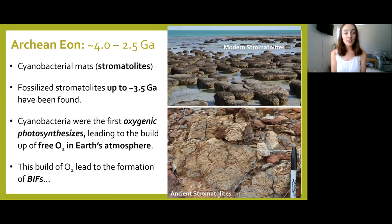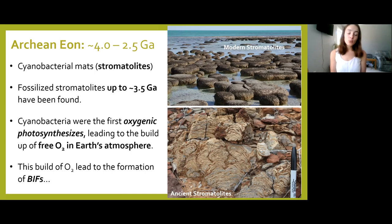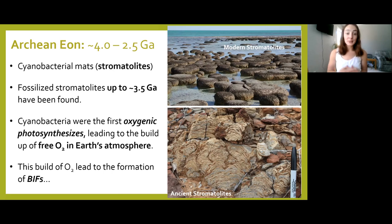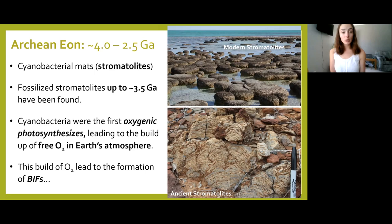The Archean was a 1.5-billion-year time interval, so a lot occurred. Cyanobacterial mats, which formed stromatolites, were microbial mats formed by cyanobacteria — organisms that carry out oxygenic photosynthesis. These were the first oxygenic photosynthesizers to become ubiquitous on Earth, and they caused free oxygen to first start building up in Earth's atmosphere. The oxygen you're breathing right now started with these wonderful microorganisms, since the Hadean atmosphere had negligible oxygen.